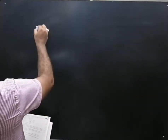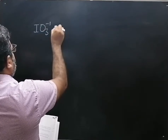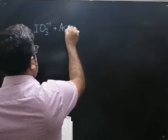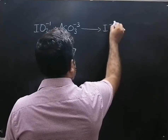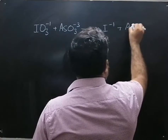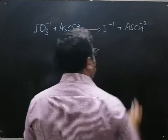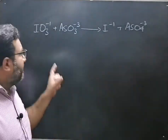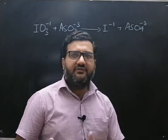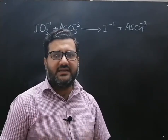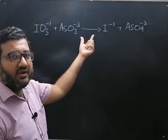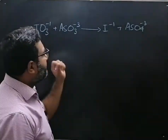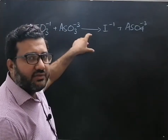Suppose we have an equation: IO₃⁻ plus AsO₃³⁻ goes to form I⁻ plus AsO₄³⁻. This is the skeleton equation written in the form of ions. Such an equation in which reactants and products are written in the form of their ions is called an ionic equation or ionic reaction. This is a redox reaction written in ionic form. Now we will show the oxidation state of each atom above it.